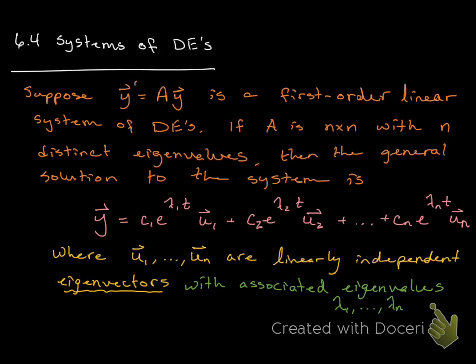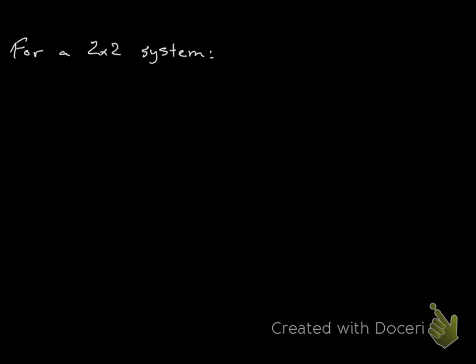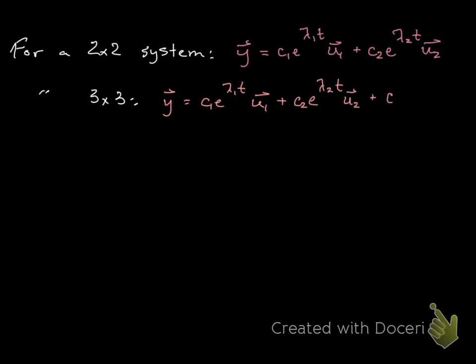Let's look at an example. Last time we did a 2 by 2 system. In a 2x2 system, we'll have y = c₁e^(λ₁t)u₁ + c₂e^(λ₂t)u₂. In a 3x3 system, we're going to see one more term: y = c₁e^(λ₁t)u₁ + c₂e^(λ₂t)u₂ + c₃e^(λ₃t)u₃.